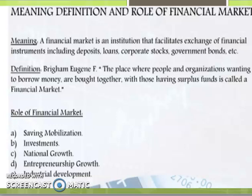Here we discuss the meaning, definition and role of financial market. A financial market is an institution that facilitates exchange of financial instruments including deposits, loans, corporate stocks, government bonds, etc. According to Brigham Eugene, the place where people and organizations wanting to borrow money are brought together with those having surplus funds is called a financial market.